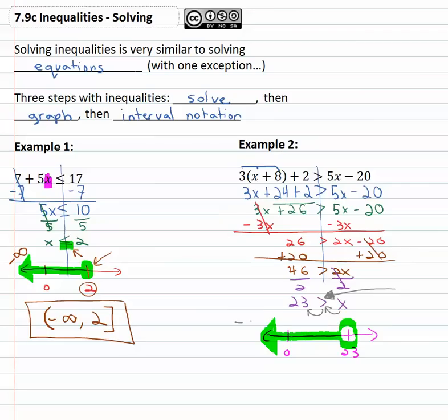Interval notation now: we see the smallest value all the way off to the left is negative infinity. The graph stops at twenty three. Infinity and negative infinity always get a curved bracket. Twenty three, because there's an open dot, because it's just greater than or less than, we'll use a curved parenthesis.